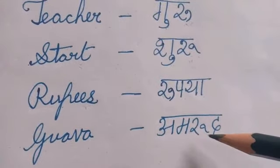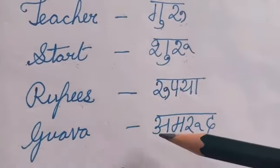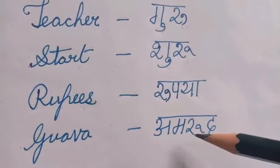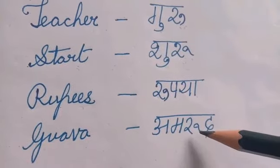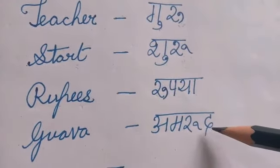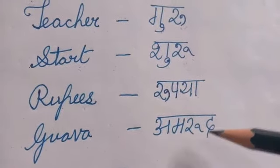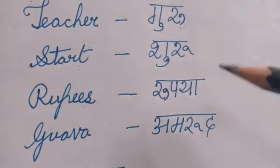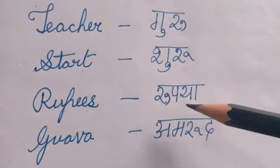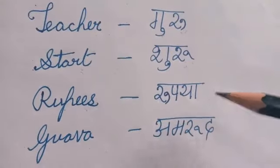Amrood — Am, Ru me badi U ki matra — Amrood. Shuru, Amrood, Guru, Rupia.